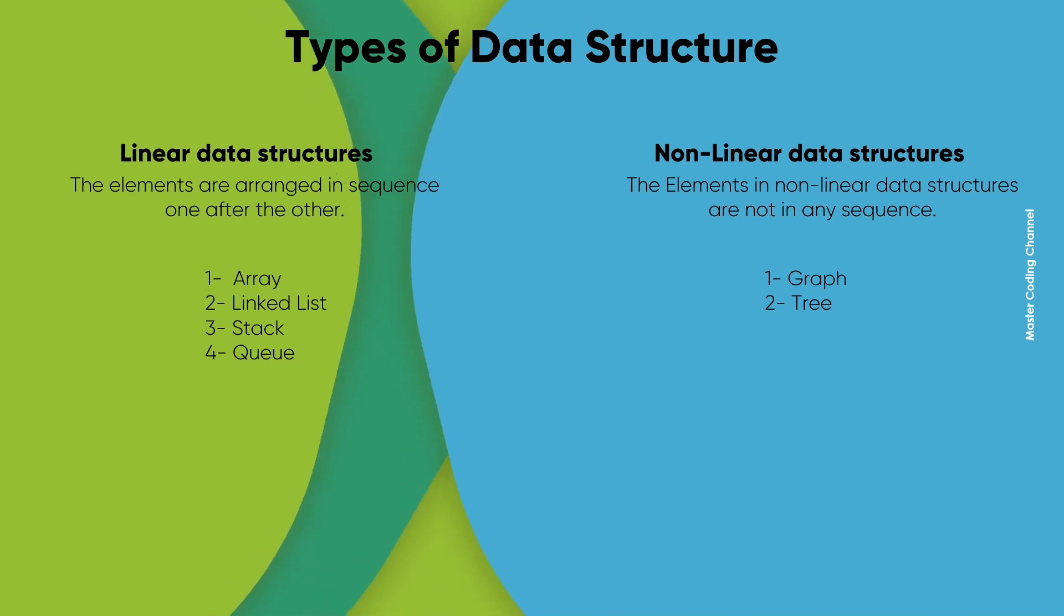In linear data structures, the elements are arranged in sequence one after the other like array, linked list, stack and queue.